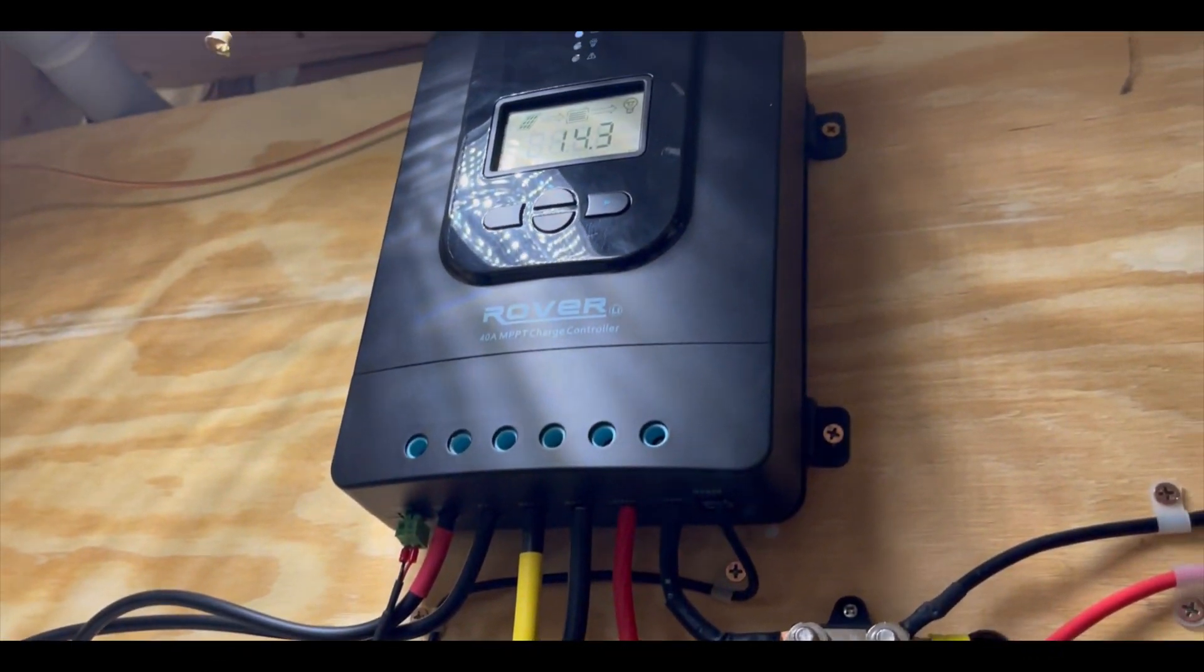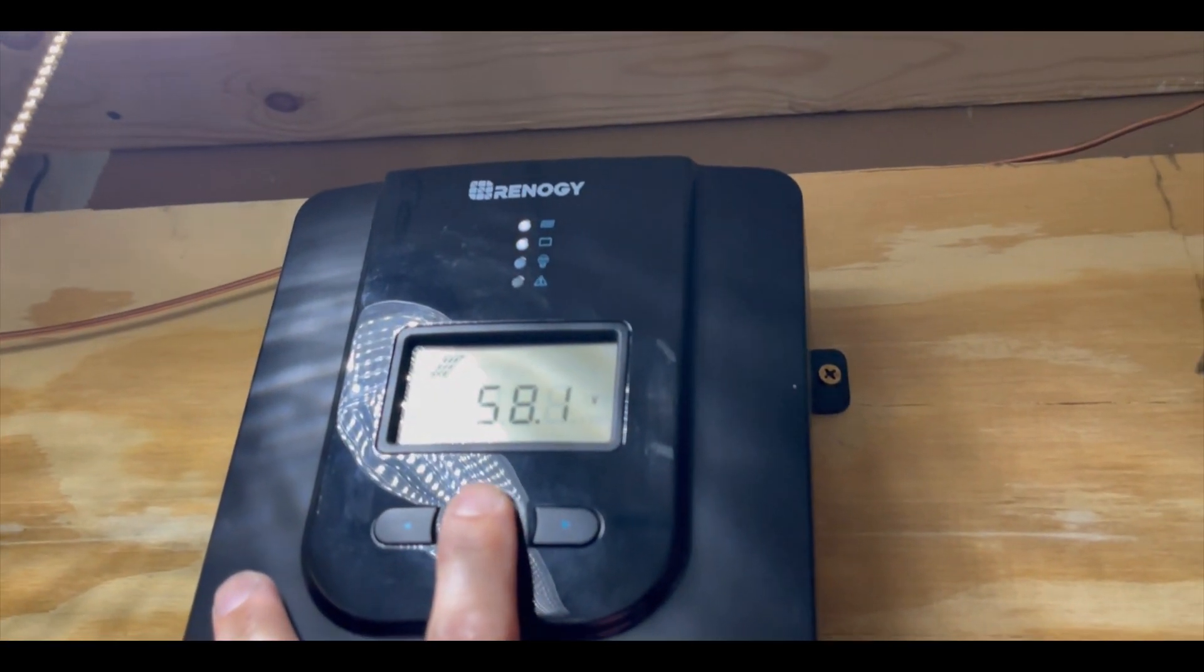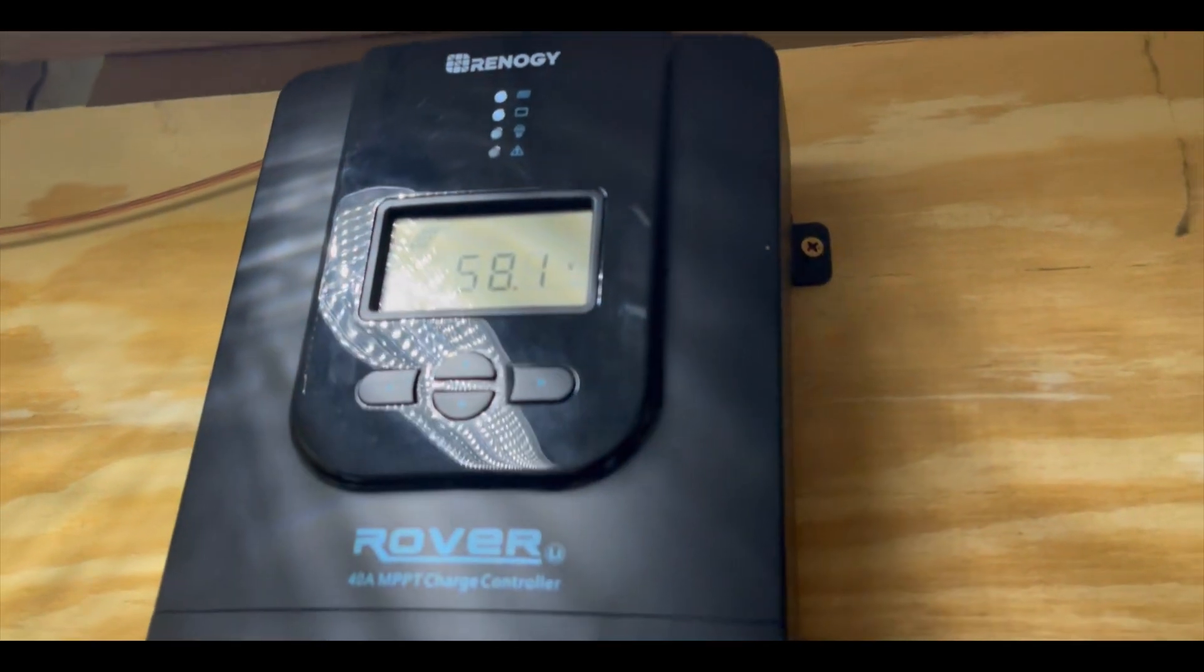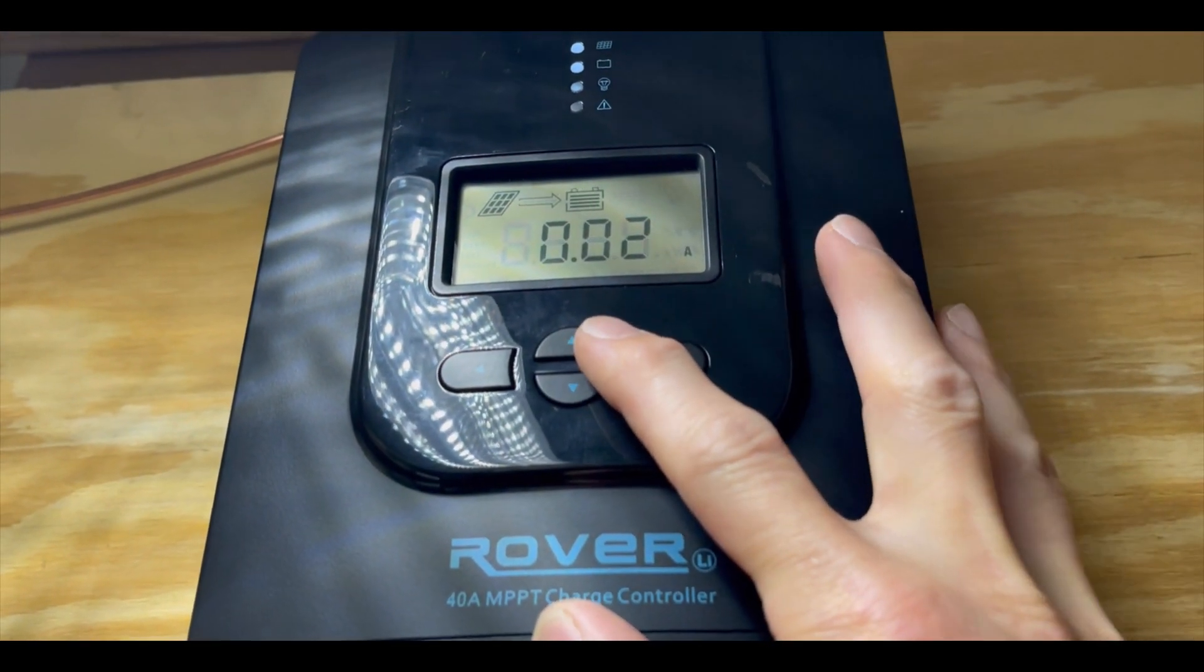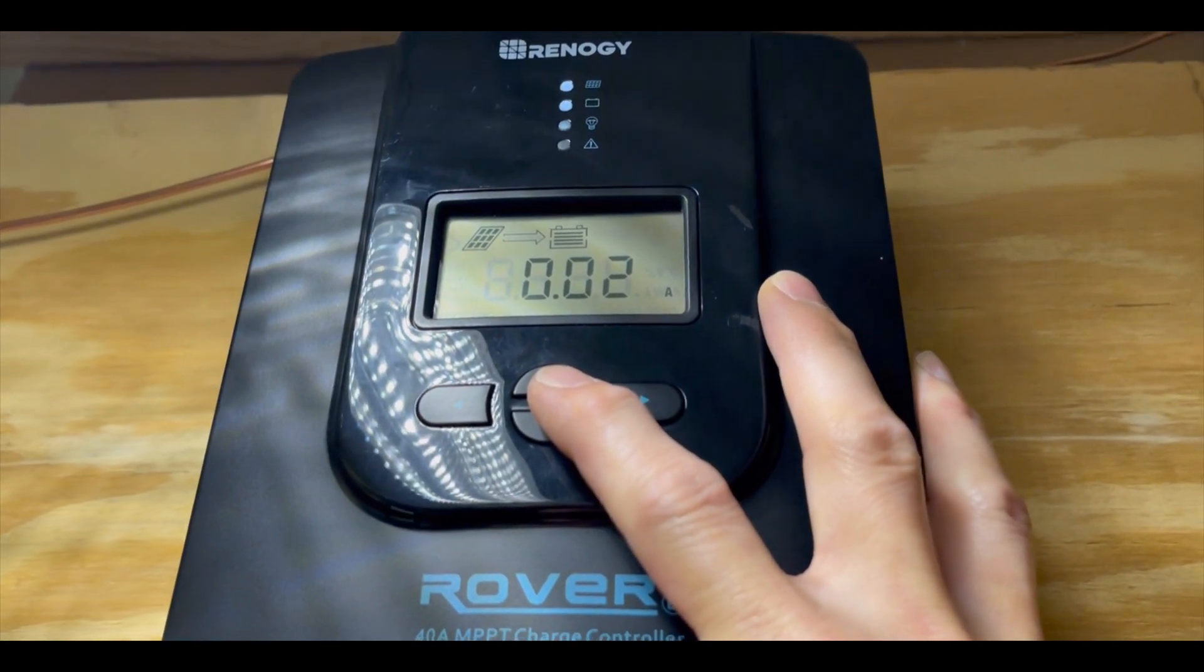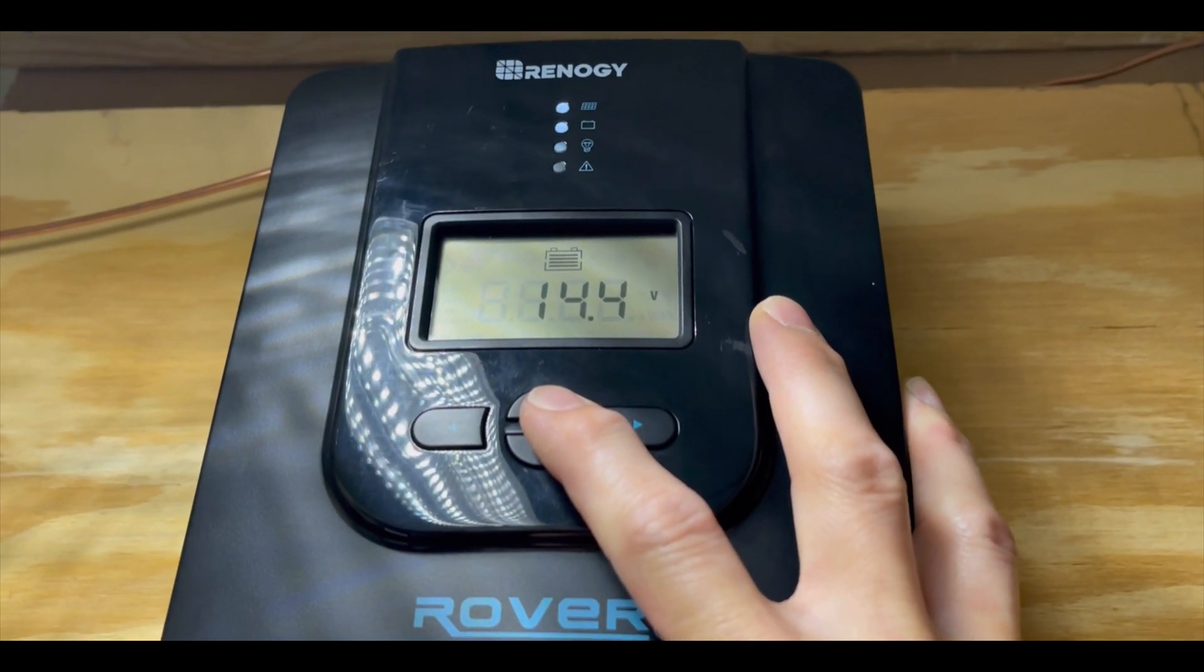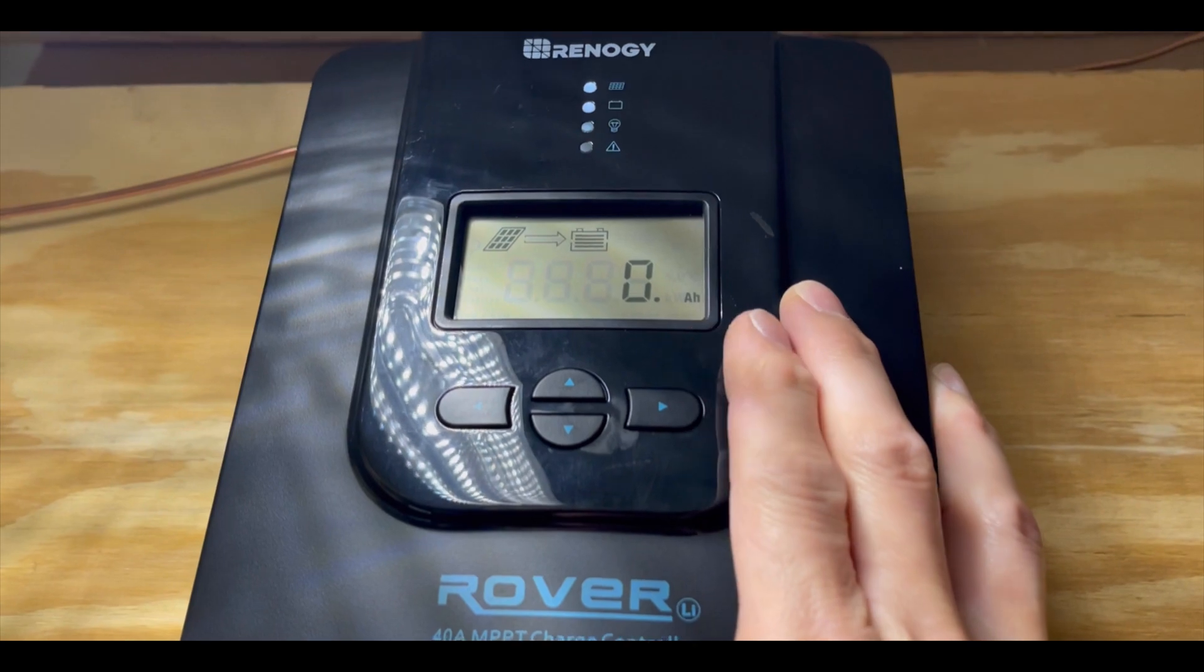We got 58 volts coming in, 0.02 amps coming in at noon from a 600 watt system. Something's wrong. Says it's 114.43 volts, it's really hard to believe.